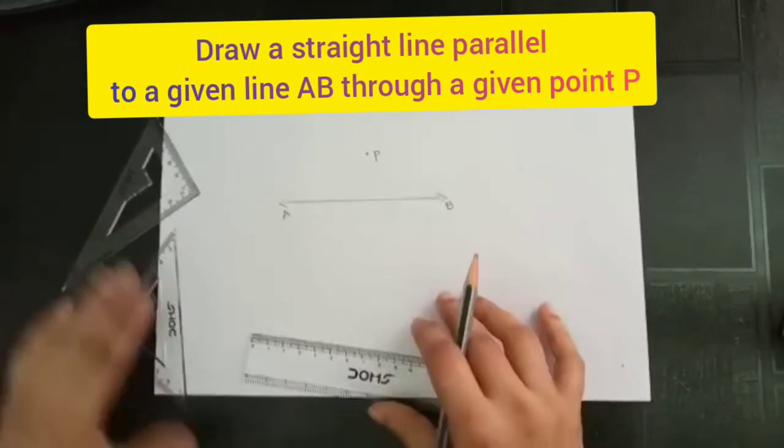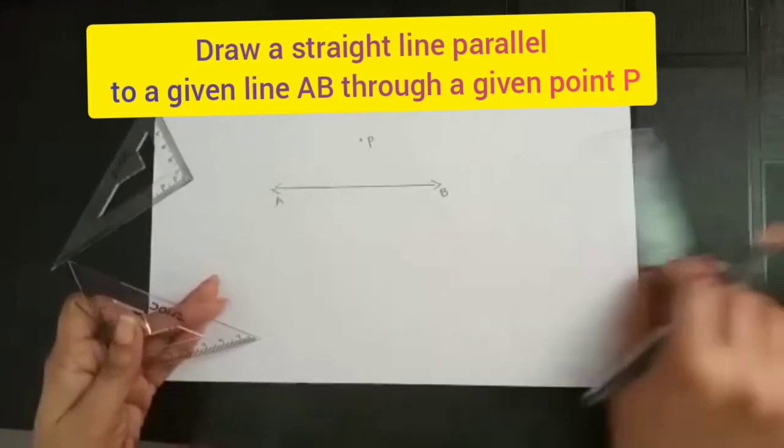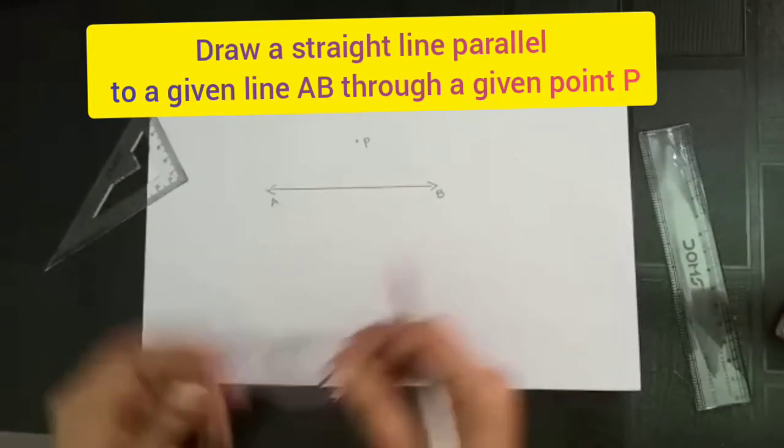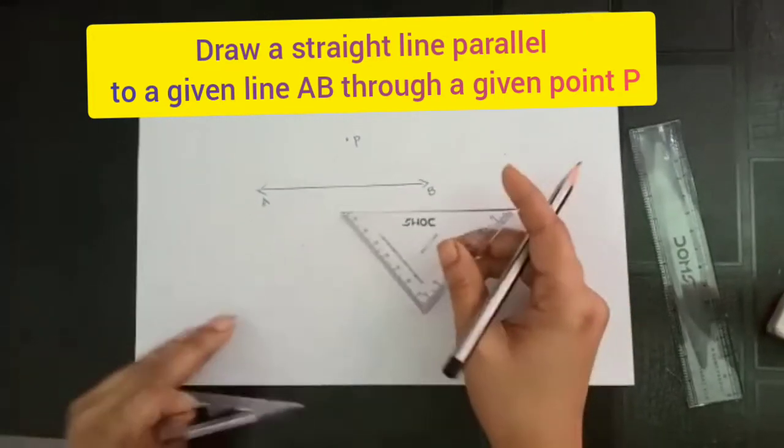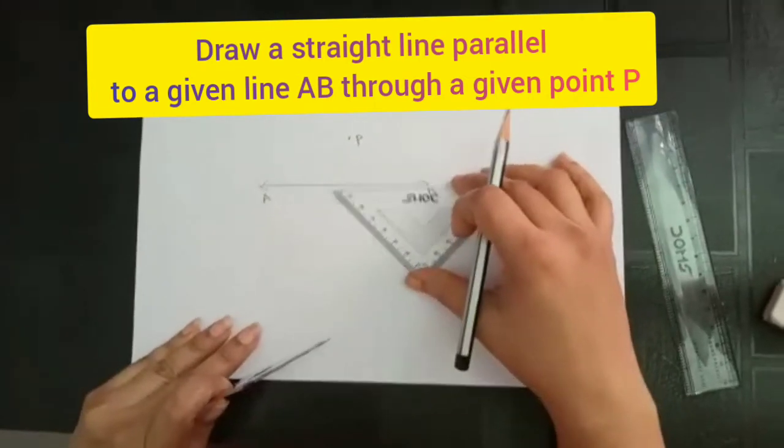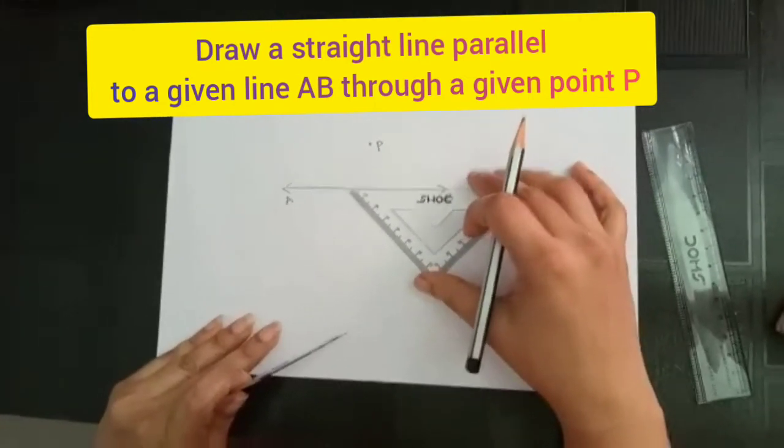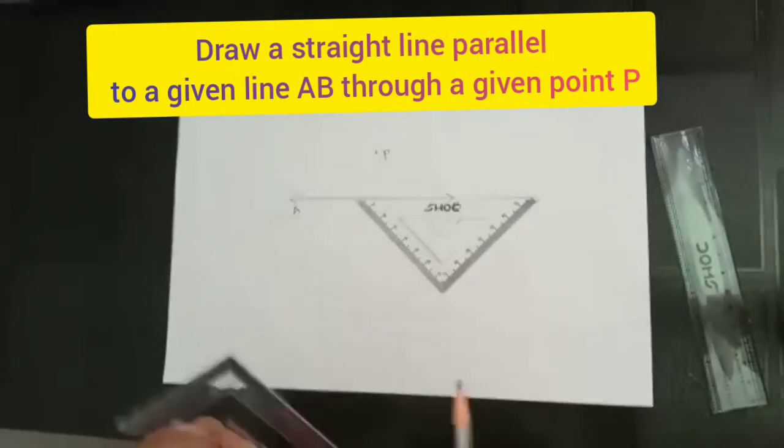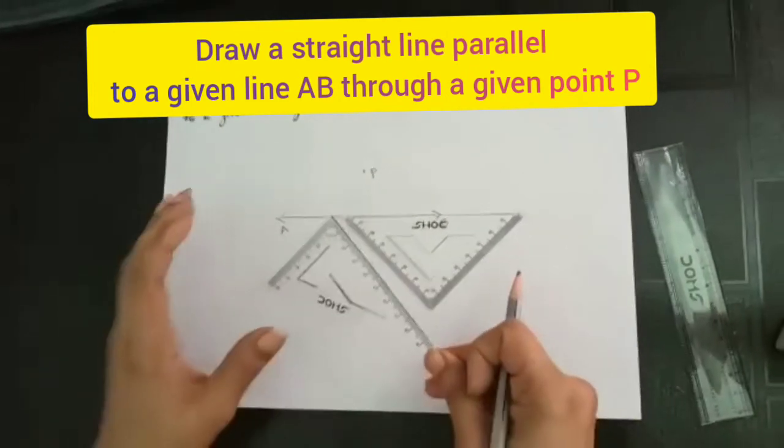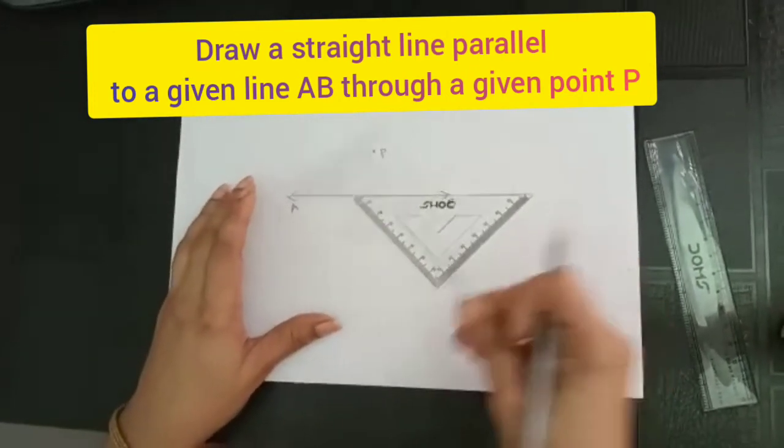Next, keep the 45-degree set square along line AB. After that, keep the other set square, the 30-60-90 one, sliding against this one.